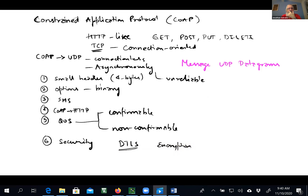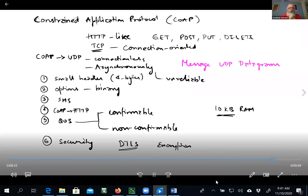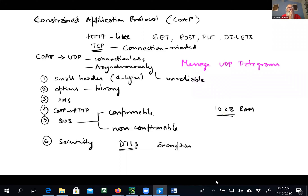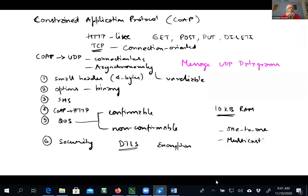The beauty of the Constrained Application Protocol is that with all these features, we can still implement CoAP on a device that has less than 10 kilobytes of RAM. There are some obvious disadvantages — because we're using UDP, it's really a one-to-one protocol. But that's not a problem because UDP supports multicast, so we can also do multicast. Some implementations of CoAP don't have the broadcast/multicast implementation, but it can easily be added.